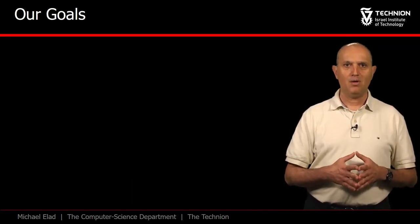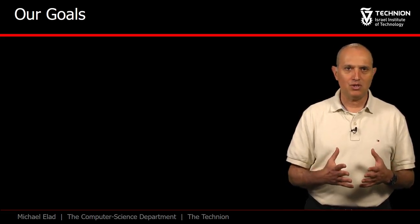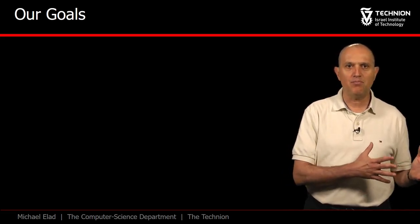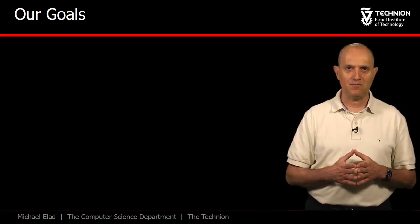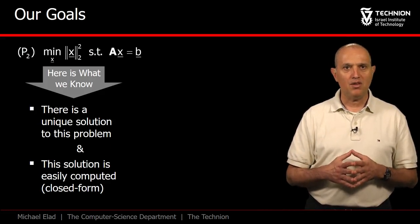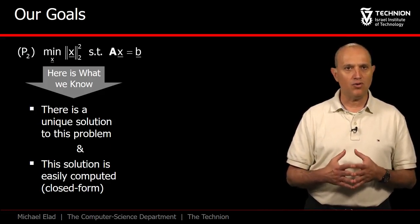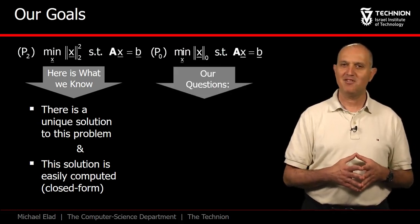What do we mean by a theoretical analysis of P0? In order to answer this question, let's recall the properties of the P2 problem, which was regularized using an L2 expression. We have seen that this problem has a unique solution, and one that can be obtained by a closed-form formula. Could we hope to say the same for P0? Not quite.